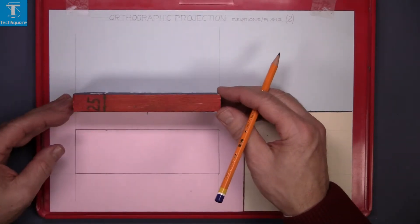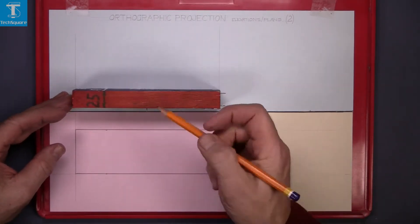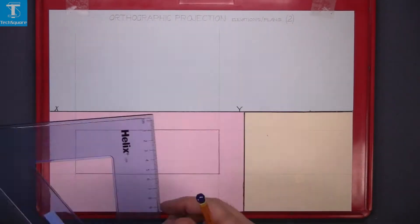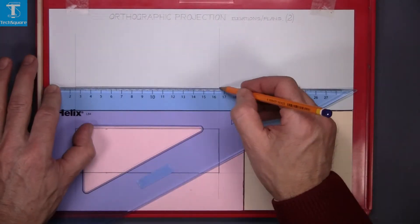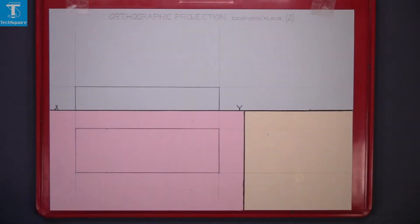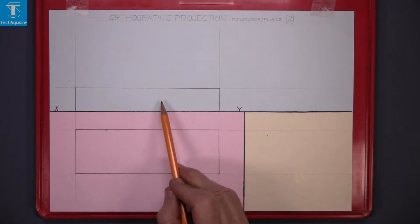Now we have to draw the elevation. This is what the elevation will look like here. The height here is 25. So again measure up your 25. Draw your horizontal line and line it in. And that's the elevation. And that's the plan.